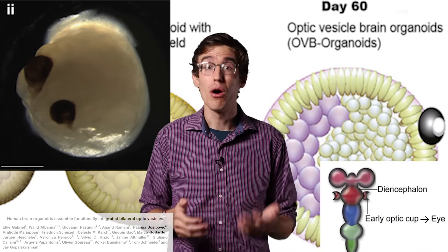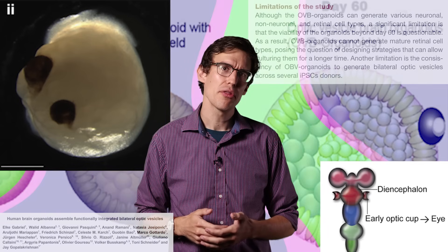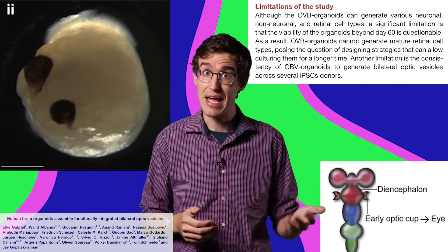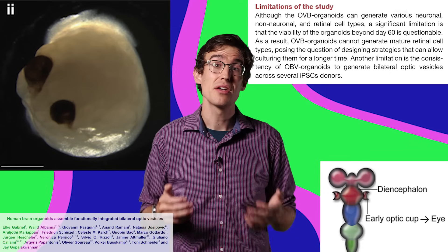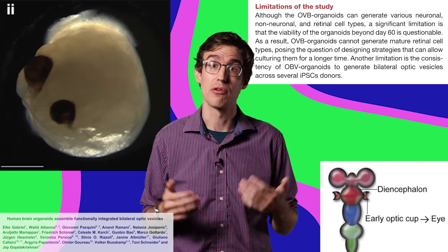These organoids were also sensitive to light, but the authors were disappointed that they started dying after 60 days, before they could develop fully grown retinal cells. So they want to find ways to keep them viable for longer.